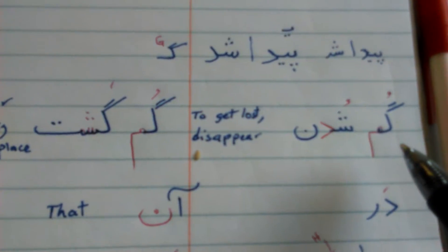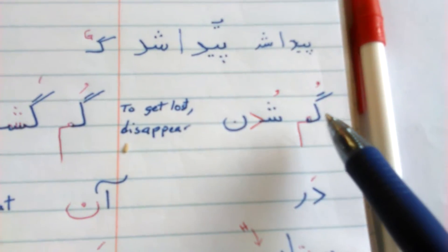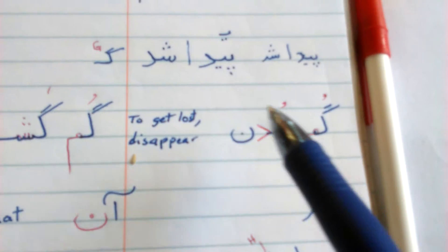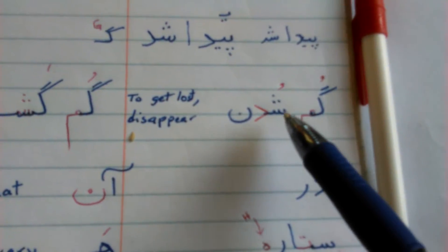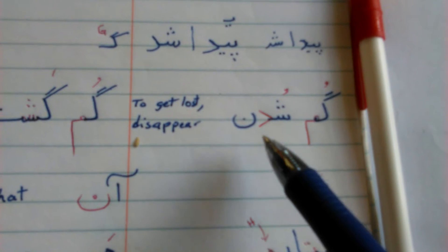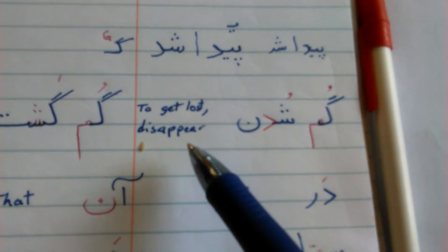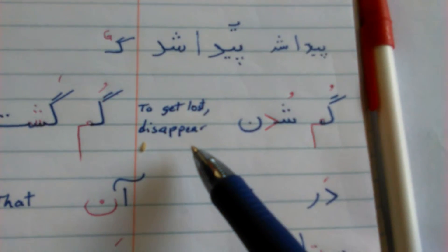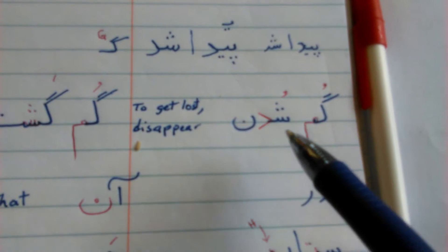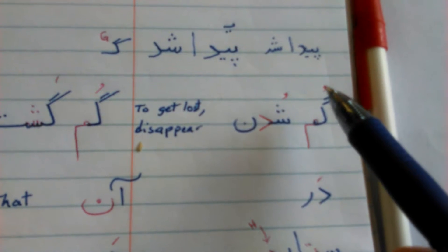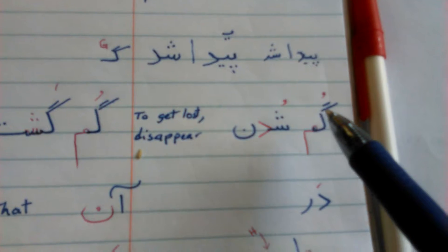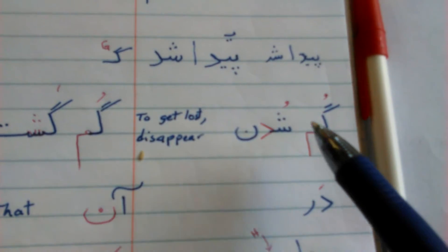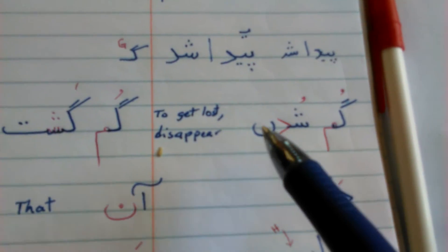Right here: 'gomshodan' — that's the letter G. 'Gomshodan' means to get lost, to disappear. That's a verb. I put that little comma there so you know that's going to sound like 'gomshodan.'